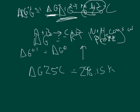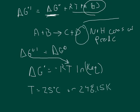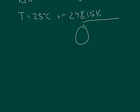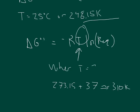We know delta G standard state equals negative RT times the natural log of Keq. The one additional specification in biochemical standard state is that temperature is set to 25 degrees Celsius, or 298.15 Kelvin. So when no hydrogen is produced or consumed, delta G biochemical standard state equals negative RT times ln(Keq) evaluated at T = 298.15 K.